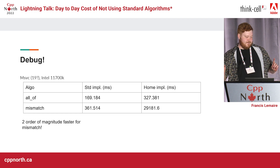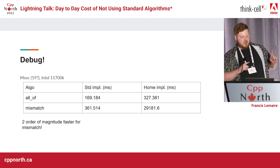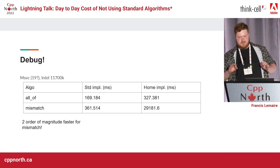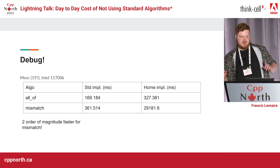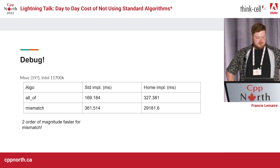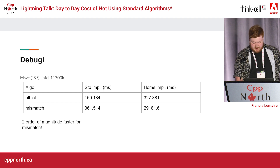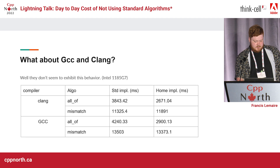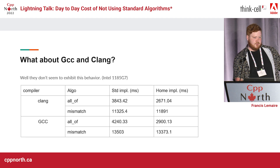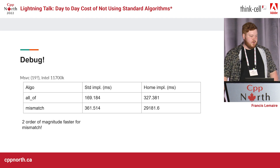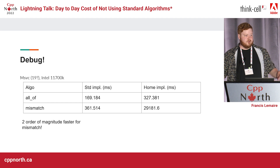Don't use personal implementations instead of standard algorithms with MSVC in debug. There are two orders of magnitude mismatch here — those are milliseconds. I also ran it on GCC and Clang; those are more reasonable numbers. But MSVC is just... I don't know what's happening. I even wanted to open a debugger and start looking at the assembly generated, but just didn't have the time, and maybe the skills.